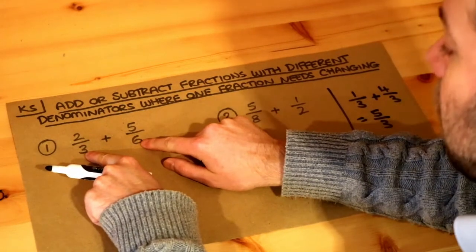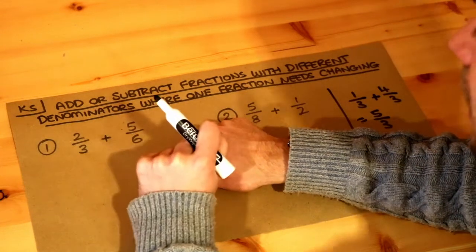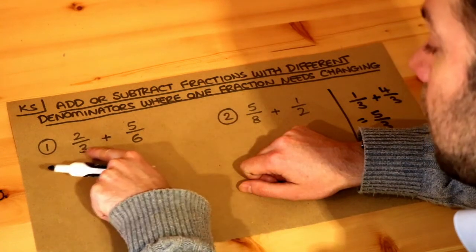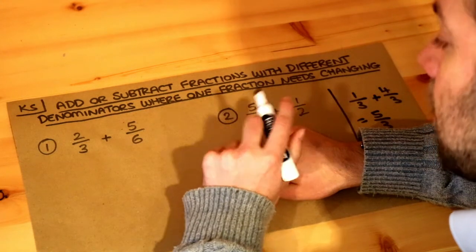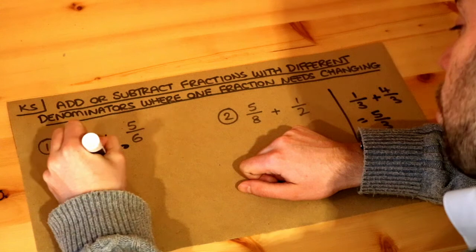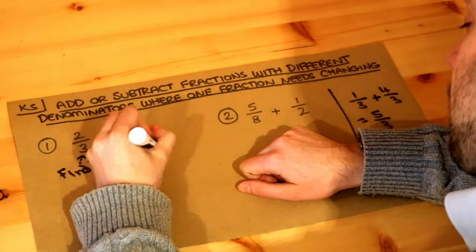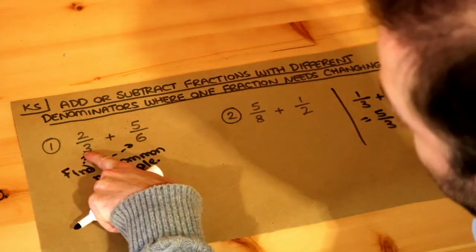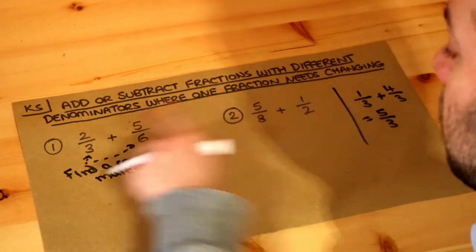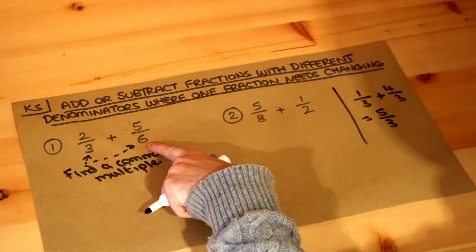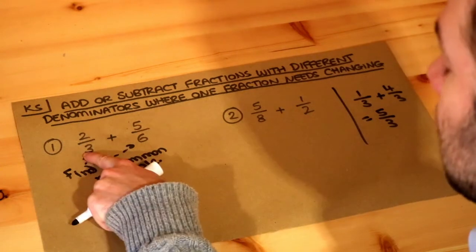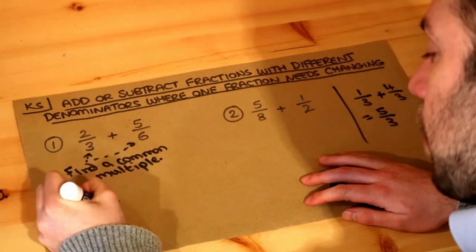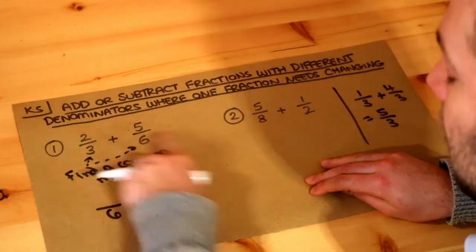So we've got three and six, we want those numbers to be the same. Now what you do is you find a number that both the three and six go into. So we want to find a multiple of three and a multiple of six that's the same. Find a common multiple, so a number that they both go into. Now let's think of multiples of three. One lot of three is three, two lots of three is six. So we've got a multiple of three is six. But six is also a multiple of six—one lot of six is six. So three goes into six and six goes into six. Our common multiple is six.